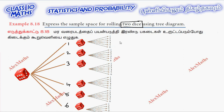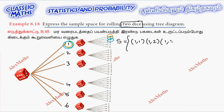Branch three: 1, 2, 3, 4, 5, 6. Branch four: 1, 2, 3, 4, 5, 6. Branch five: 1, 2, 3, 4, 5, 6.